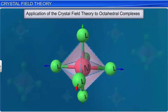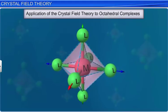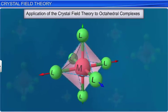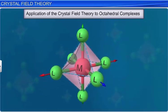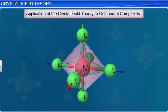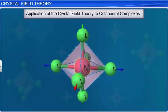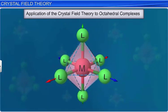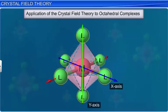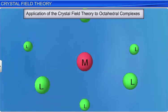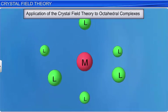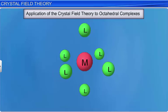Let's look at the application of the crystal field theory to octahedral complexes. In octahedral complexes, the metal ion is at the center of the octahedron and the six ligands lie at the six corners of the octahedron along the three axes X, Y, and Z as shown here. The approach of the ligands towards the central metal ion is considered a two-step process.